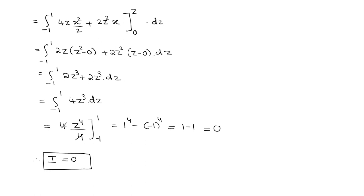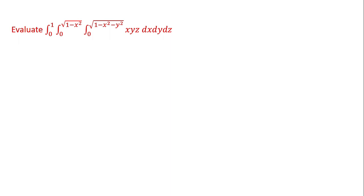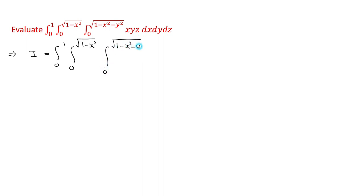For the second problem, let I = ∫(0 to 1) ∫(0 to √(1 minus x²)) ∫(0 to √(1 minus x² minus y²)) xyz dz dy dx. Note that the limits are functions of x and y, so the order of integration should be z first, then y, then x, with 0 to 1 as the limits of x.